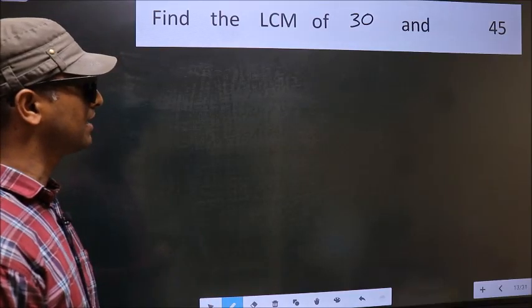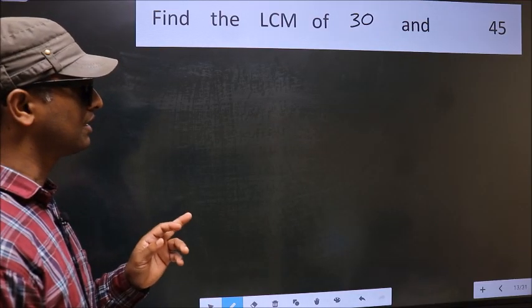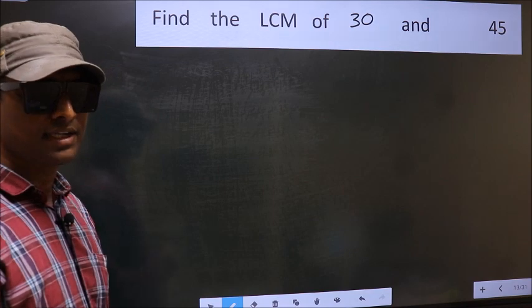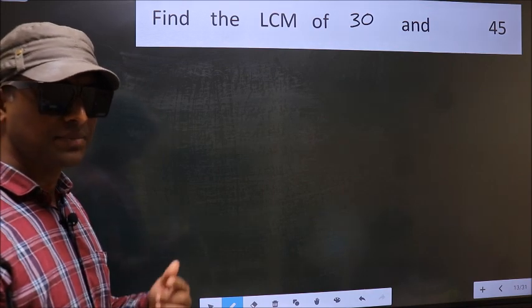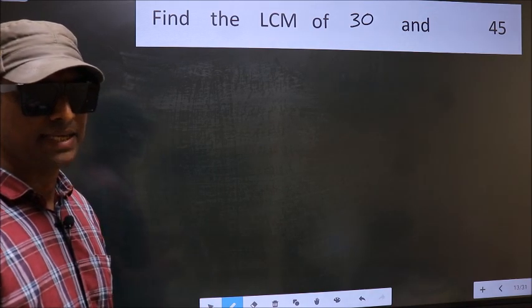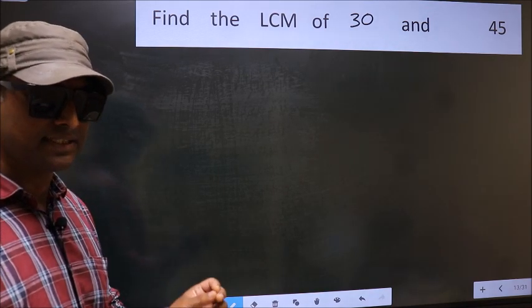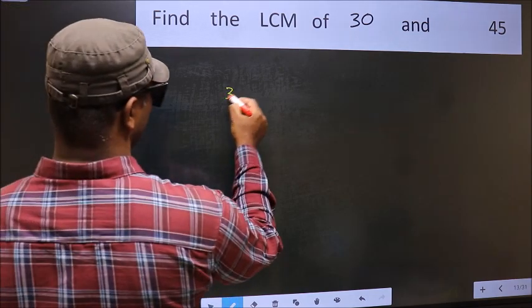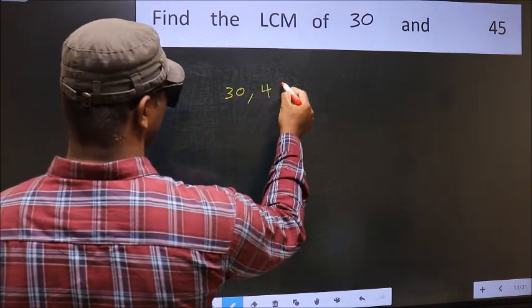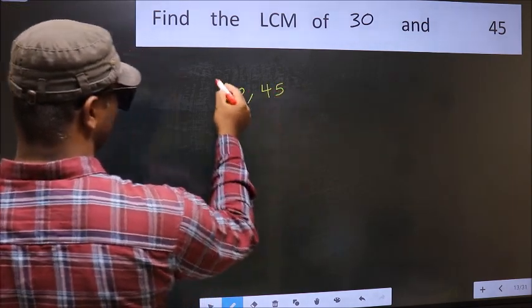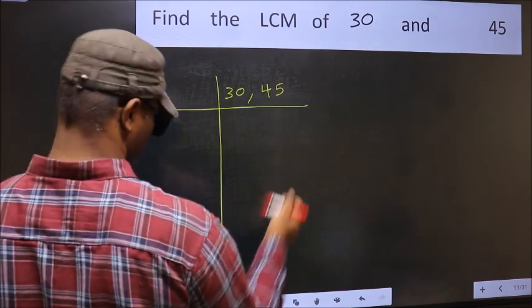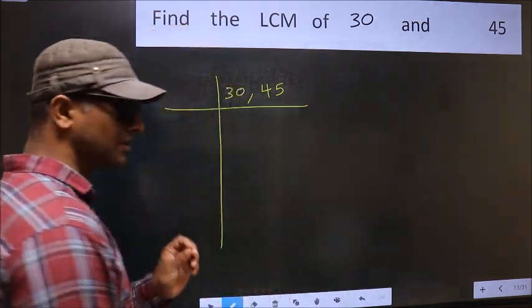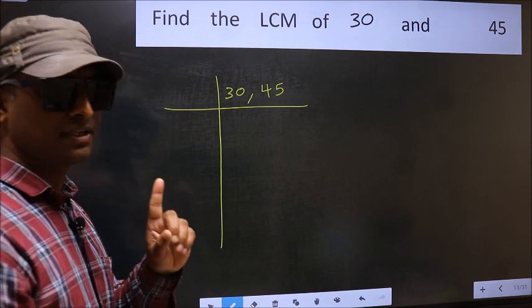Find the LCM of 30 and 45. To find the LCM, we should frame it in this way — write 30 and 45 side by side. This is your Step 1.